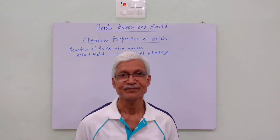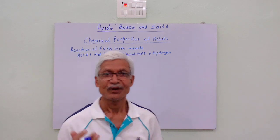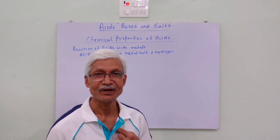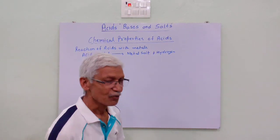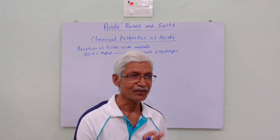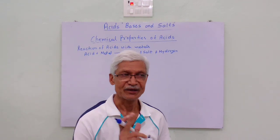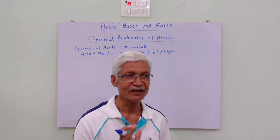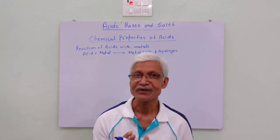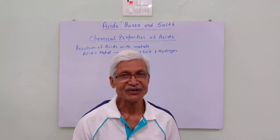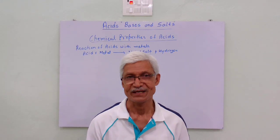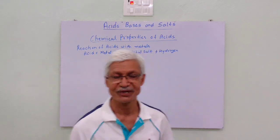Welcome to the second segment. In this segment, we shall read the chemical properties of acids. We have to read about four properties: the reaction of acids with metals, reaction of acids with metal carbonate and bicarbonate, reaction of acids with bases or alkalis, and reaction of acids with metal oxides. Let us see step by step.